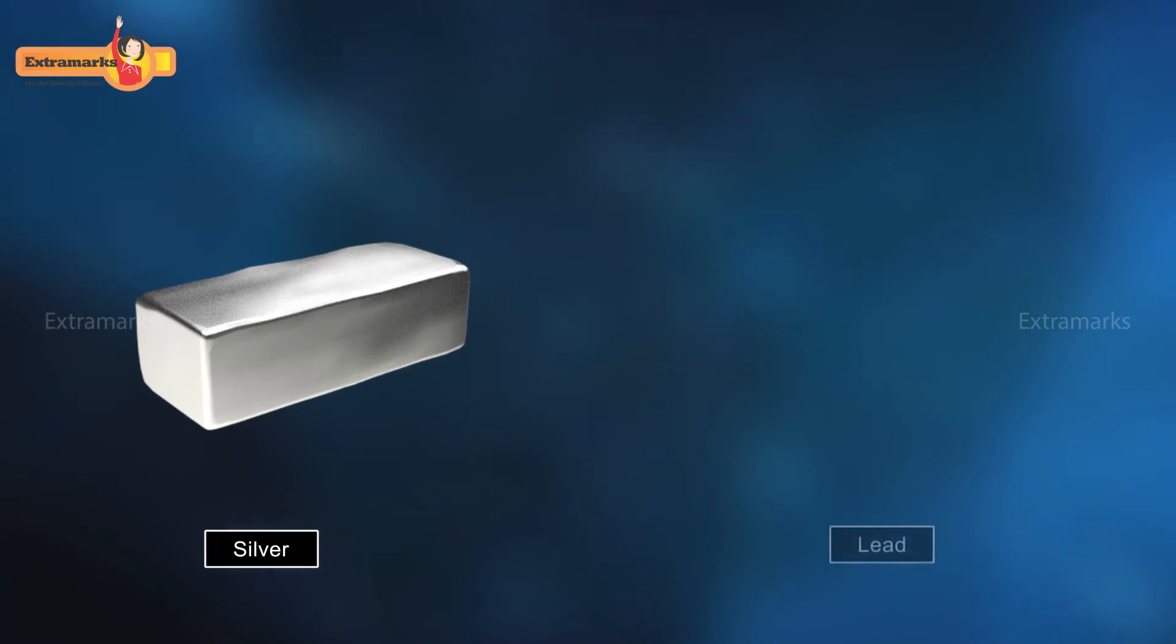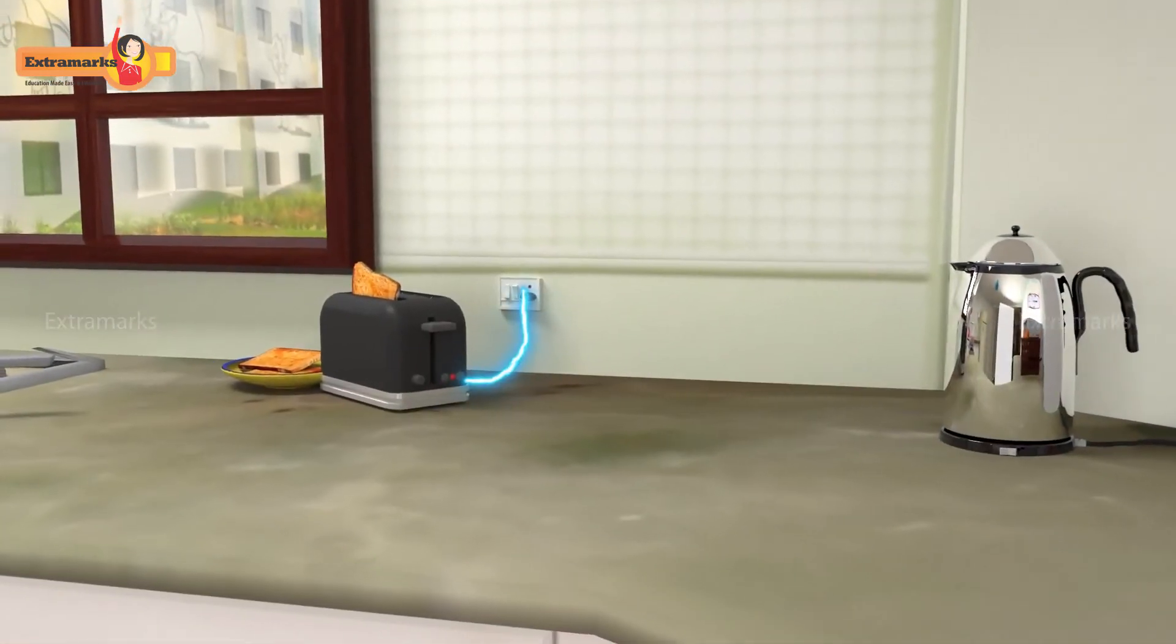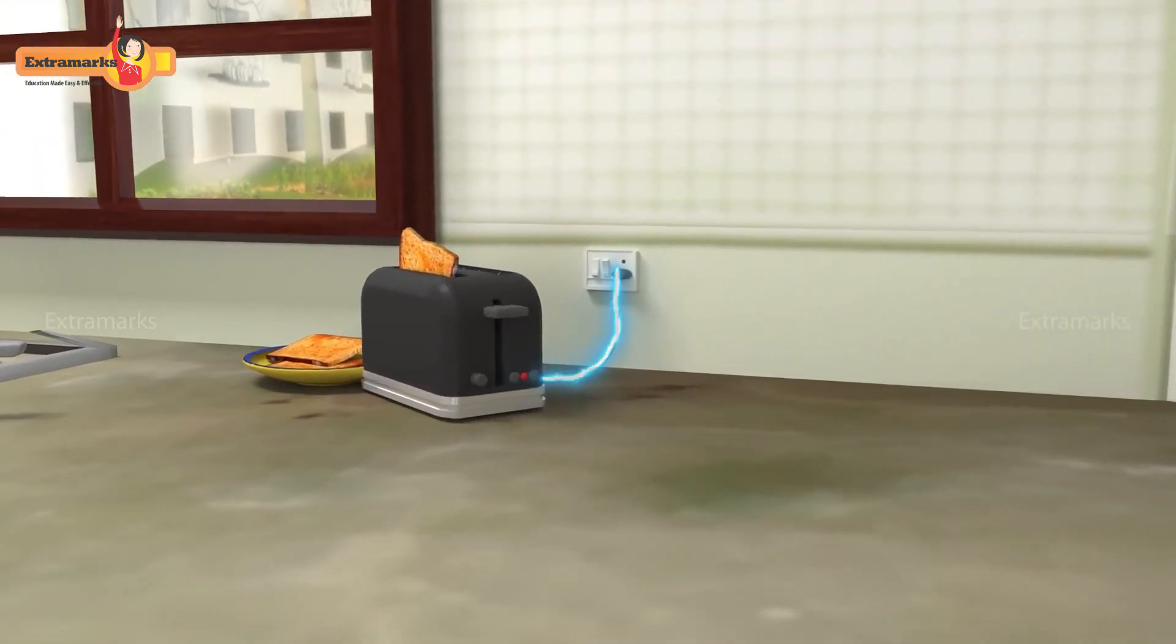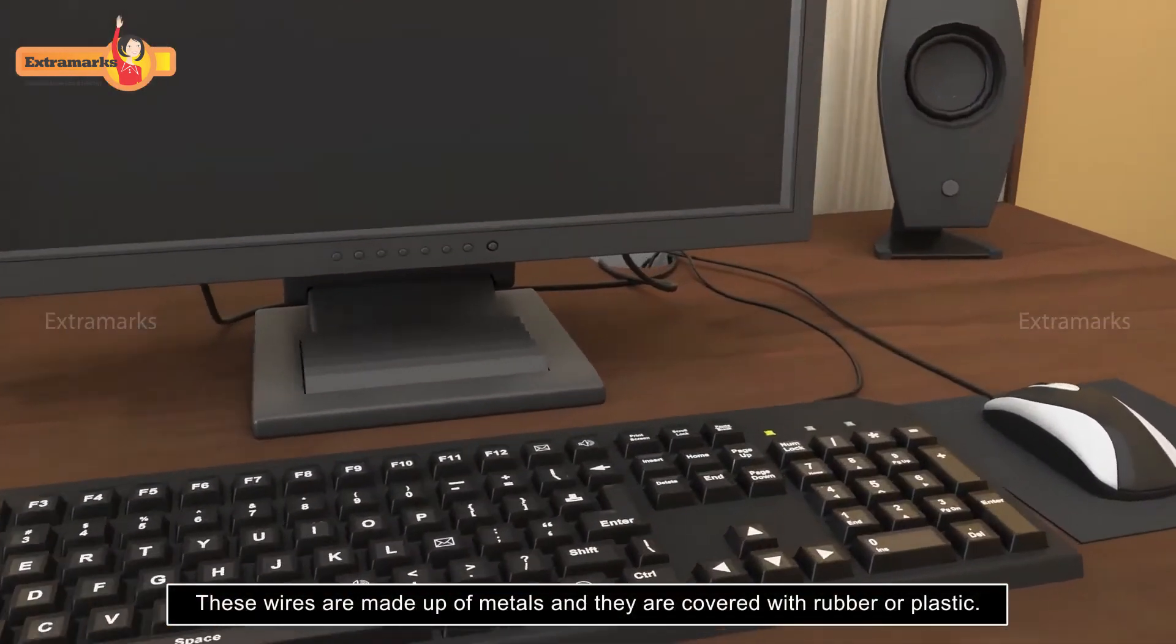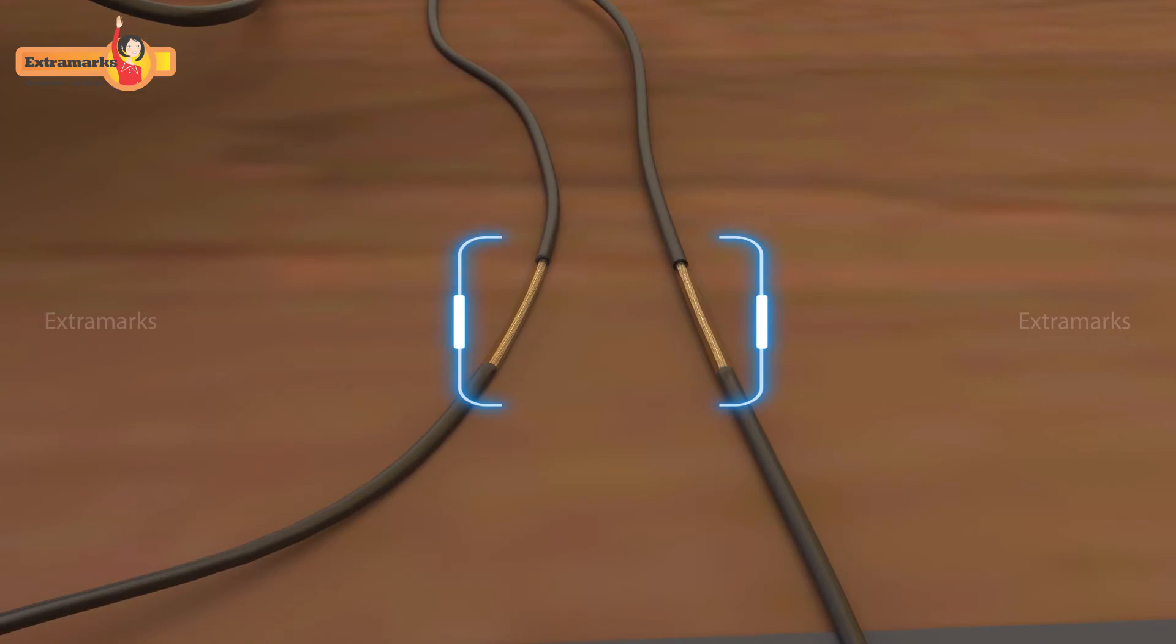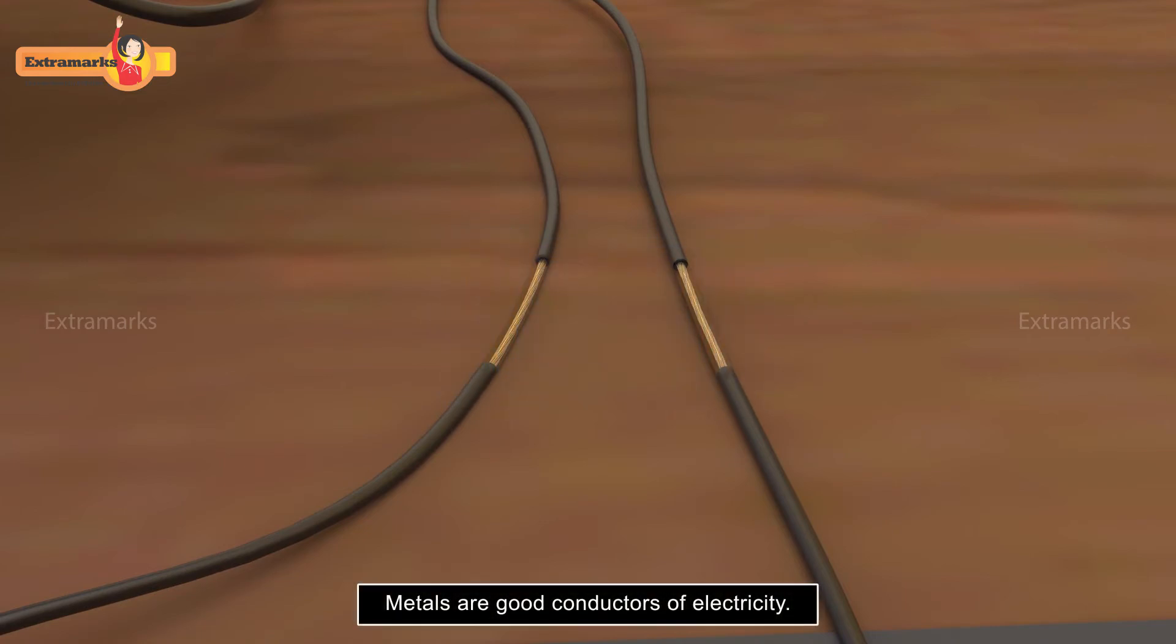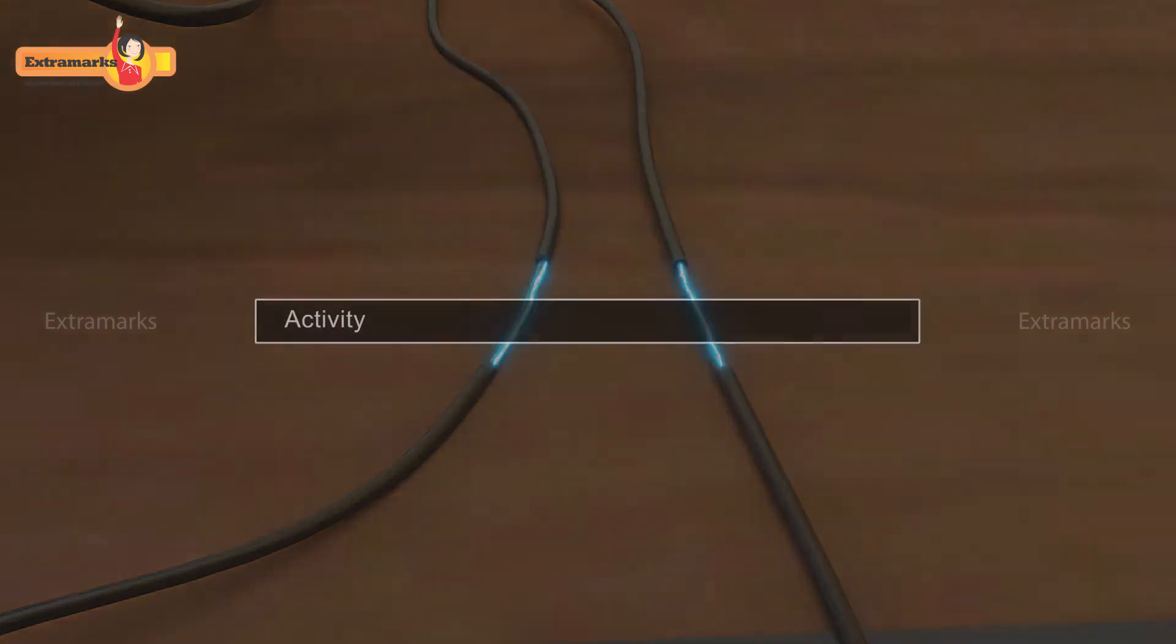Silver is the best conductor of heat, and lead is the poorest conductor. You must have seen wires attached to electrical gadgets such as toasters, television sets, and computers. These wires are made up of metals and are covered with rubber or plastic because metals are good conductors of electricity. If we touch such wires while electricity is passing through them, we will get an electric shock.